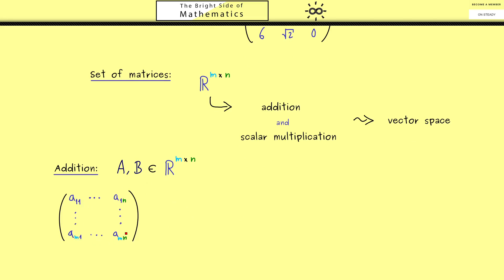In other words we add the two tables of numbers here. For the first table we call the numbers lowercase a and for the second matrix we call them lowercase b.